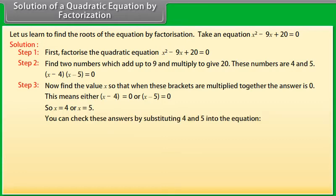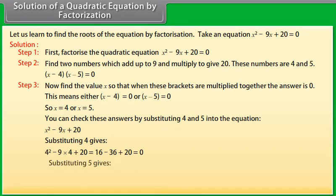You can check these answers by substituting 4 and 5 into the equation x² - 9x + 20. Substituting 4 gives: 4² - 9(4) + 20 = 16 - 36 + 20 = 0. Substituting 5 gives: 5² - 9(5) + 20 = 25 - 45 + 20 = 0.